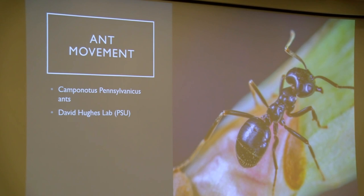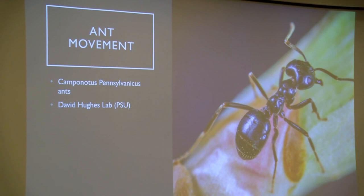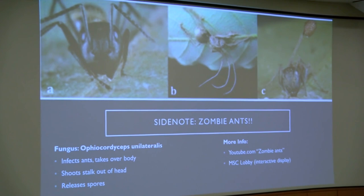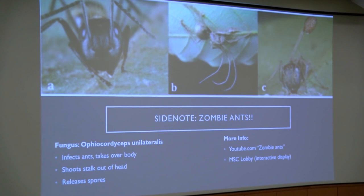My first example involves ant movement — joint work with the David Hughes Lab. We're going to talk about movement conducted in a lab about 100 yards away on Camponotus pennsylvanicus ants, small black carpenter ants collected in the forest around here. As a side note, I have to give a shout out to David's system because we can say 'zombie ants' and mean it. There's a fungus, the Ophiocordyceps fungus, that will infect an ant, spread throughout its body, make it latch onto the underside of a leaf until it dies, then shoot a stalk out of its head releasing spores that infect other ants.